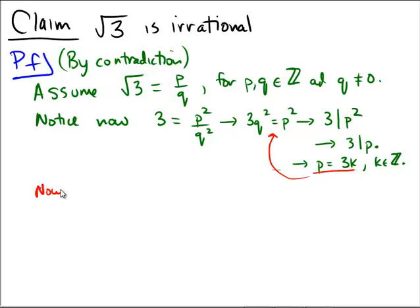Which would now say, now, notice, 3q squared would be equal to p, which is now 3k squared.